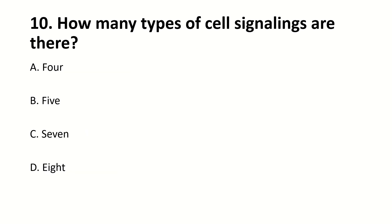How many types of cell signaling are there? Right answer is A — four.